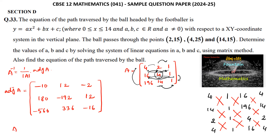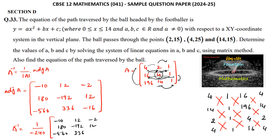Therefore, A⁻¹ = (1/−240) × [−10, 12, −2; 180, −192, 12; −560, 336, −16].